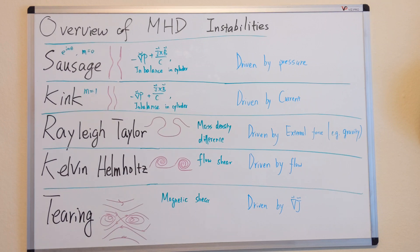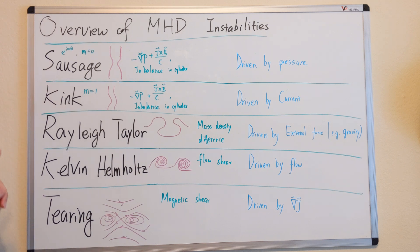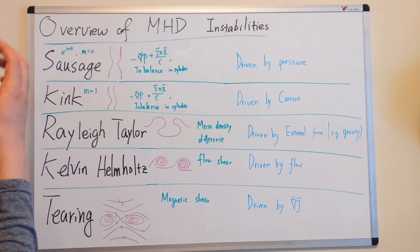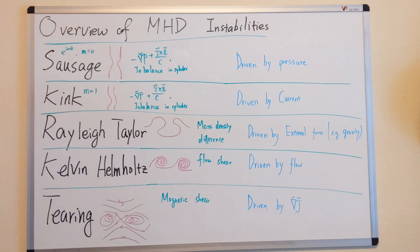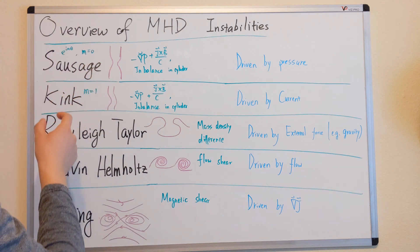Let me give you an overview of the MHD instabilities. This is not a full picture of all the MHD instabilities — there are a few that I introduce in this video series: sausage instability, kink instability, Rayleigh-Taylor instability, Kelvin-Helmholtz instability, and tearing instability. The purple images are the signature pictures of each.